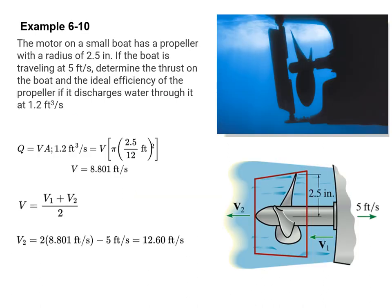Let's take a look at an example, Example 6-10. We have a motor on a small boat that's propelled with a radius of 2.5 inches. If the boat is traveling at 5 feet per second, we want to determine the thrust on the boat and the ideal efficiency of the propeller if it discharges water through it at a rate of 1.2 cubic feet per second. The 1.2 cubic feet per second, that's our Q.